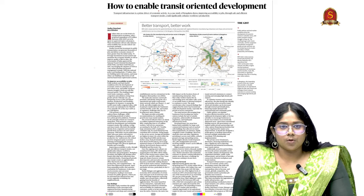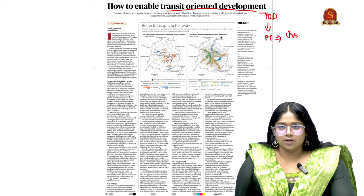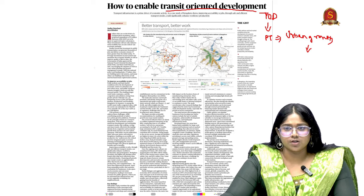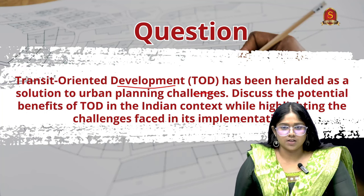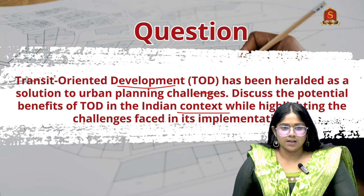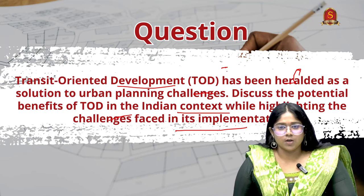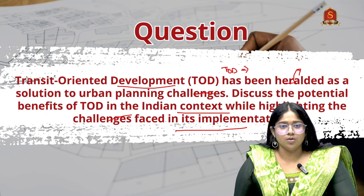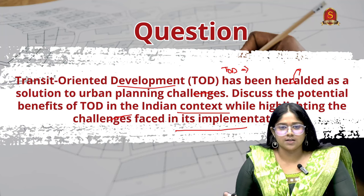The first article discusses a concept called Transit Oriented Development, that is TOD, where there is integration of public transport with urban growth to increase productivity. The main question for this article: 'Transit Oriented Development has been heralded as a solution to urban planning challenges — discuss the potential benefits of TOD in the Indian context while highlighting the challenges faced in its implementation.' 'Heralded' means something which is going to happen soon.